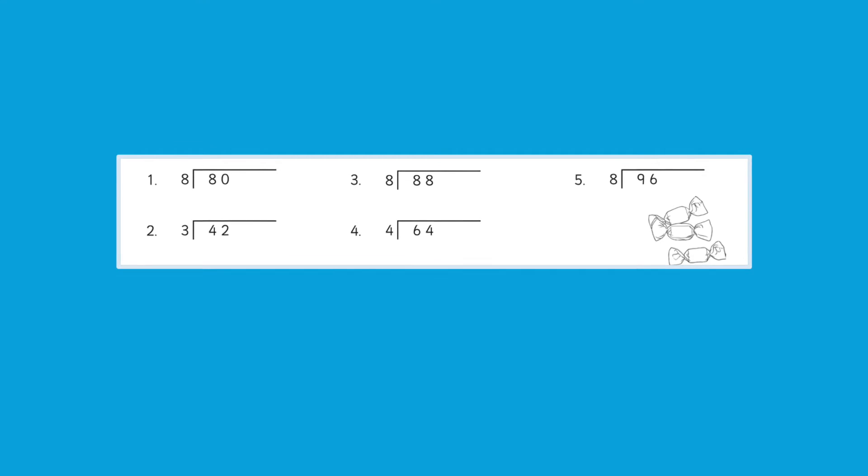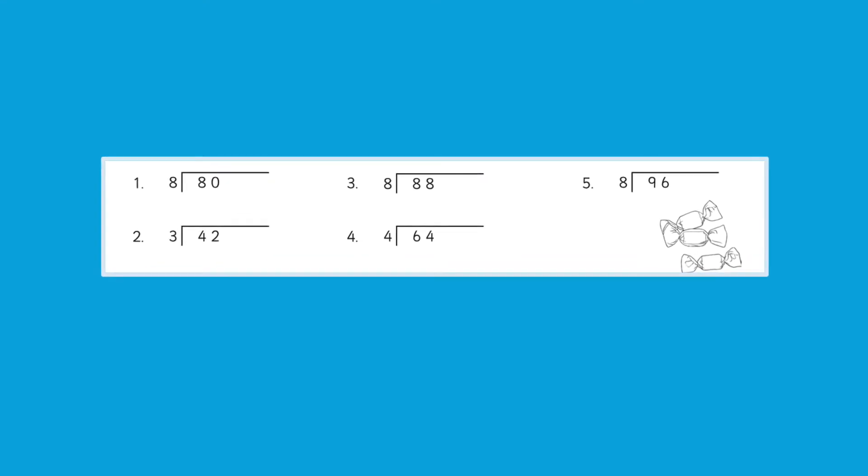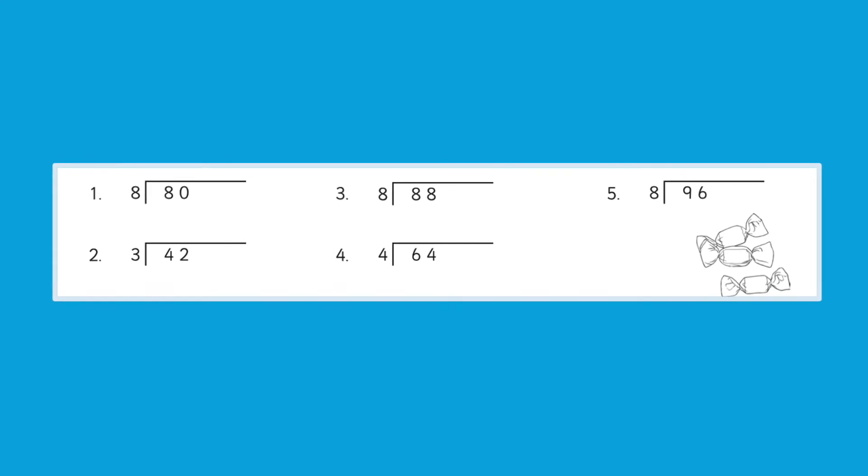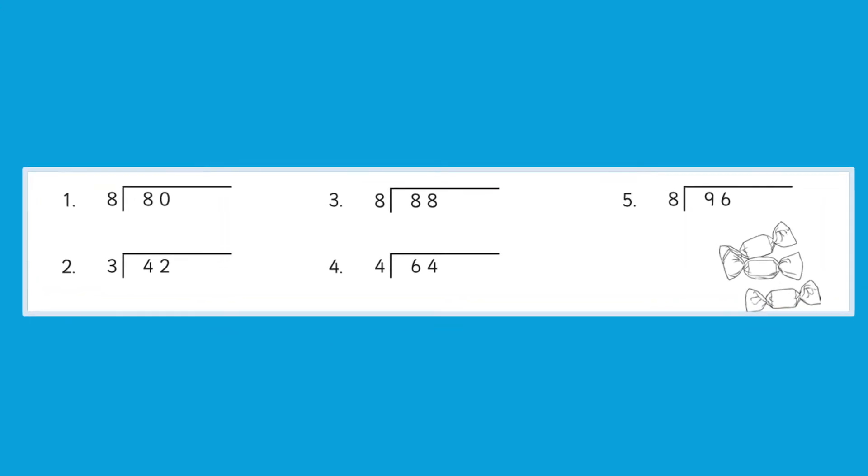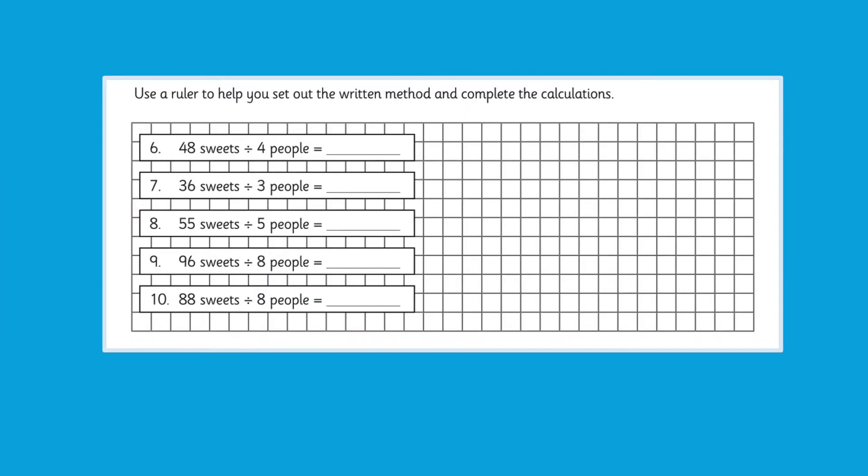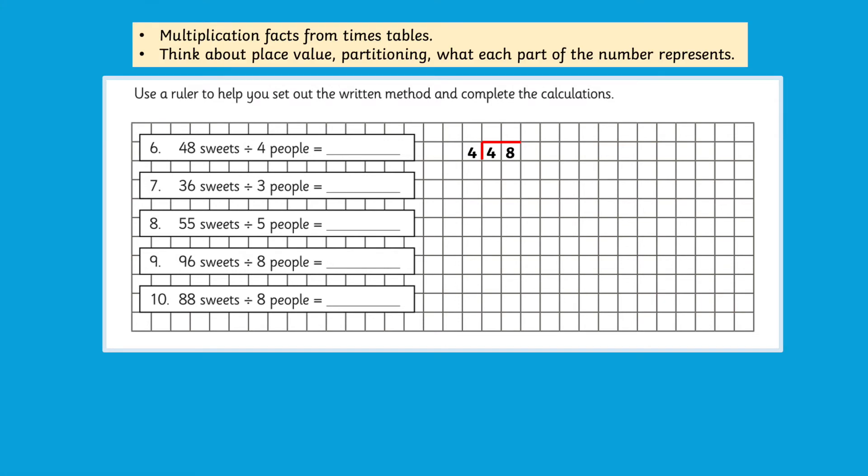So the short division activity gives ample opportunity to simply practice this written method, which will be easily combined using resources within the class. As the activity sheet progresses, children are presented division calculations in different ways. Here, learners must present the number sentences as short division calculations on paper before they work out the answer.